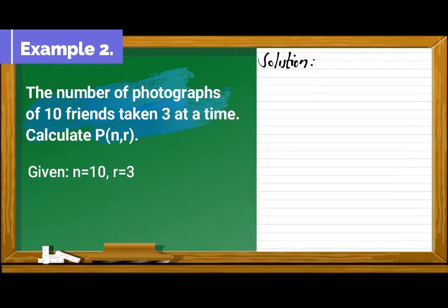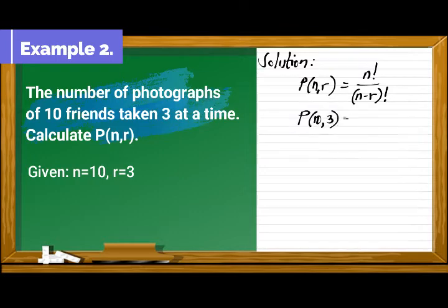Solution: First, write the formula. Second, substitute the given in the formula. Next, simplify. 10 minus 3 is equal to 7.